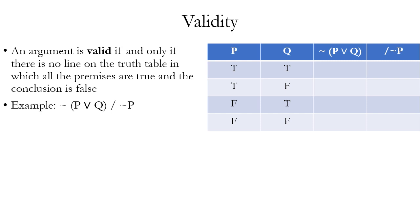Our example argument has the premise tilde parentheses P wedge Q closed parentheses, and the conclusion therefore tilde P. A more intuitive way of putting this: your premise is it's false that either P or Q are true, and your conclusion is that therefore not P is true — that is, P is false.